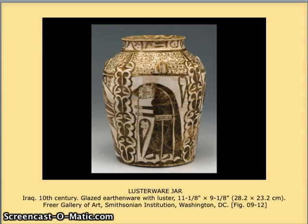Another of the high arts of the early Islamic artisans was glazed earthenware or pottery. They would actually use powdered precious stones like lapis or maybe malachite to create the glazes that they used to paint on these vases.